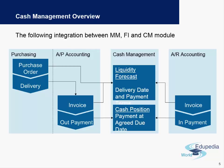Secondly, it also checks the way the payment is made — for example, whether it is made manually or automatically, and whether there is any mode of payment to be recorded, such as checks or payment advices. This affects the cash position of the company because when cash is going out for payments, a difference is triggered in the balance sheet of the company.